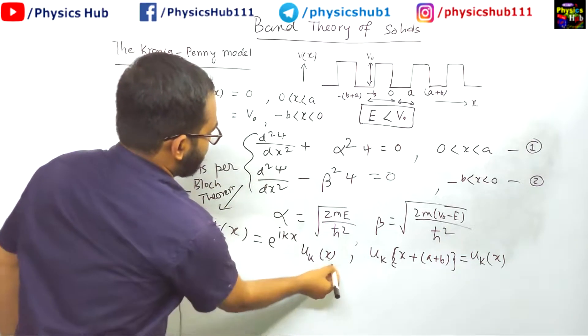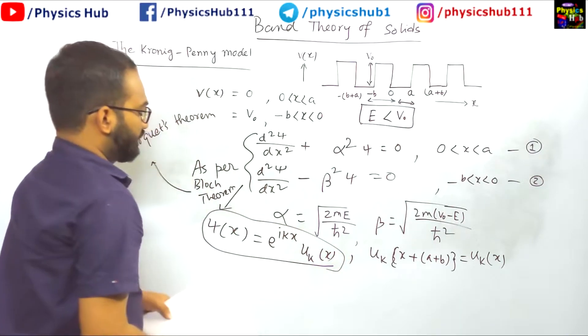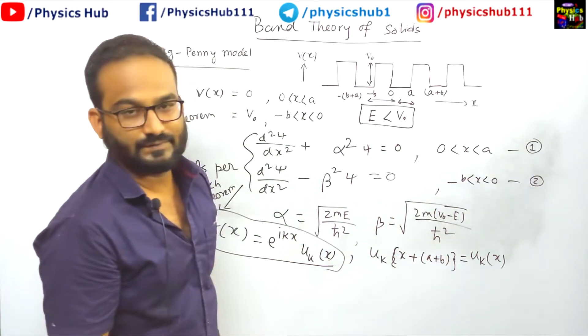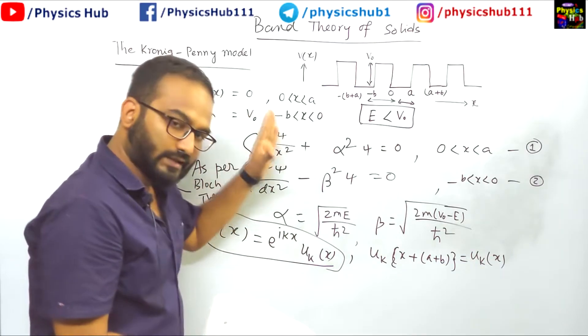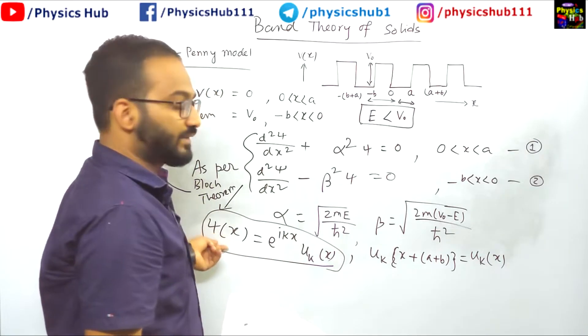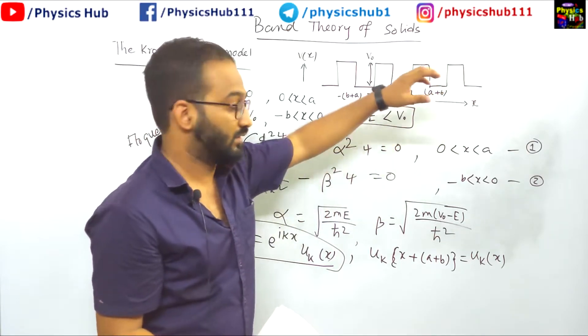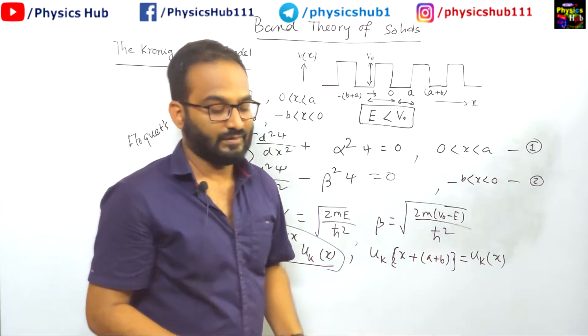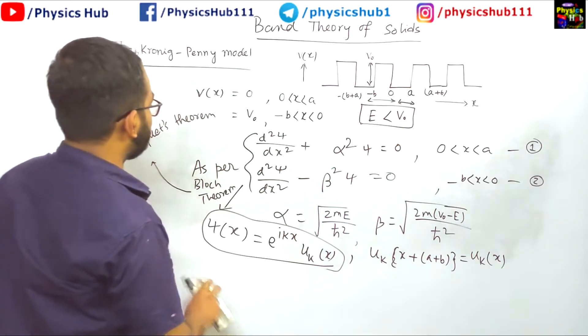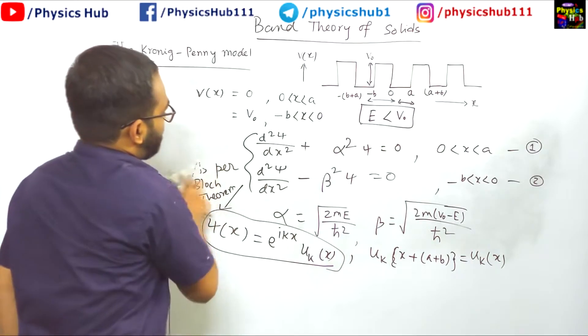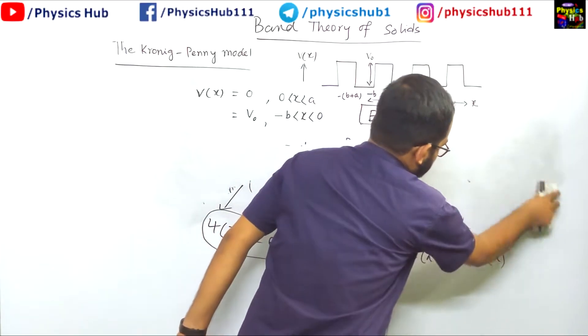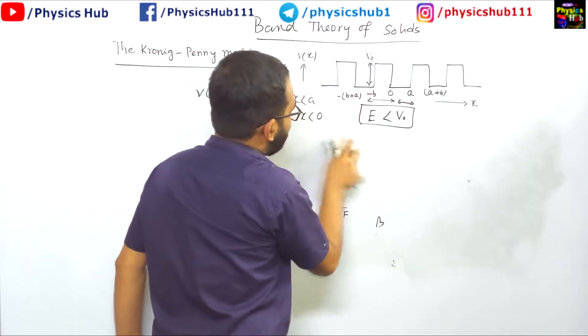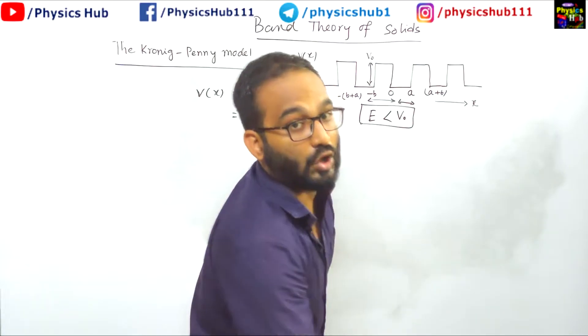So once we get this wave function we can just insert this wave function into this Schrödinger equation to get further things. There is a long calculation after inserting wave function, utilizing its continuity and differential property of this wave function, and doing some calculation will end up to this expression which I am going to write. I do not think the long calculation you require. For the understanding I am just giving you the final expression.